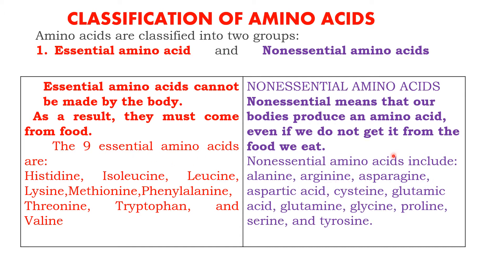This is an important question: distinguish between essential and non-essential amino acids and give examples. The nine essential amino acids that our body cannot synthesize and must be supplied through diet are histidine, isoleucine, leucine, lysine, methionine, phenylalanine, threonine, tryptophan, and valine.